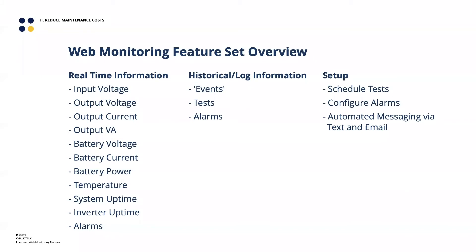Beyond real-time data, the historical information is where this really becomes powerful. Events — anything someone might need to know about, including its duration and start and end conditions — include things like power outages, scheduled tests, and any active alarms. All of that can be viewed with start and end times to see exactly what's happened throughout the entire history of the device. You can also schedule tests, configure alarm thresholds, and configure who gets automated text message and email alerts — all through the web monitoring portal.